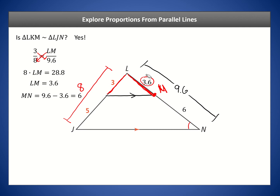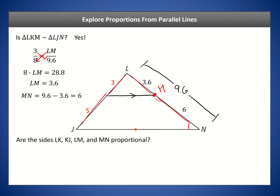Now we want to ask: are the two pairs of segments — 3 and 5 on one side, and 3.6 and 6 on the other — proportional? Are sides LK, KJ, LM, and MN proportional? The answer is yes. We can verify by taking the ratio of corresponding segments: 3 divided by 5 is 0.6, and 3.6 divided by 6 is also 0.6. The ratios are equal, so they are proportional.